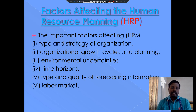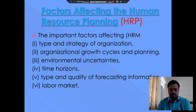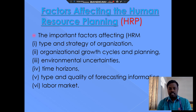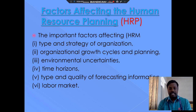Next, factors affecting human resource planning. There are six factors affecting human resource planning. The first one is types and strategy of organizations — the organization plans different types of strategies. The second one is organizational growth cycle and planning, where different cycles cause changes in planning.